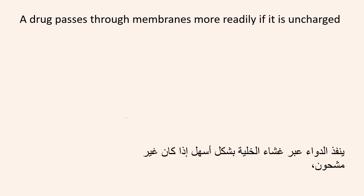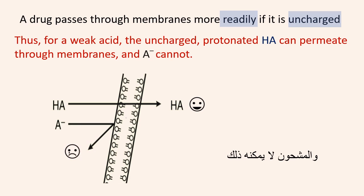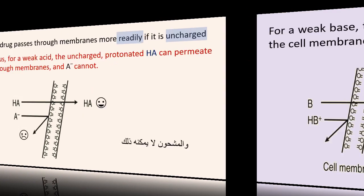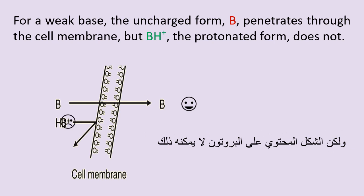A drug passes through membranes more readily if it is uncharged. Thus, for a weak acid, the uncharged protonated form HA can permeate through membranes, and A- cannot. For a weak base, the uncharged form B penetrates through the cell membrane, but BH+ — the protonated form — does not.